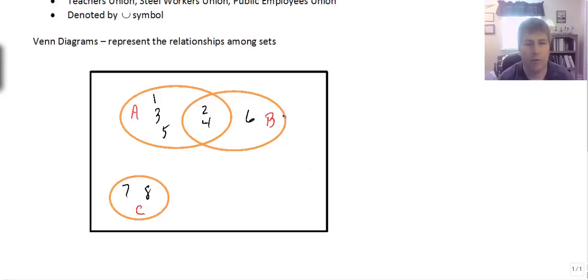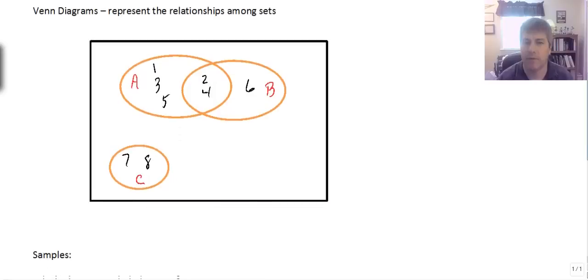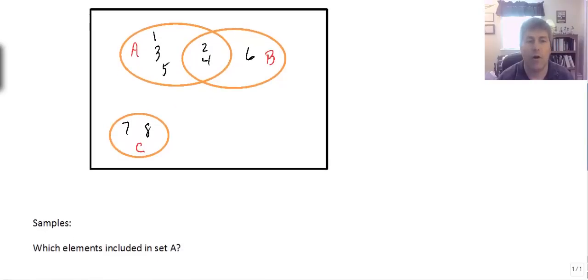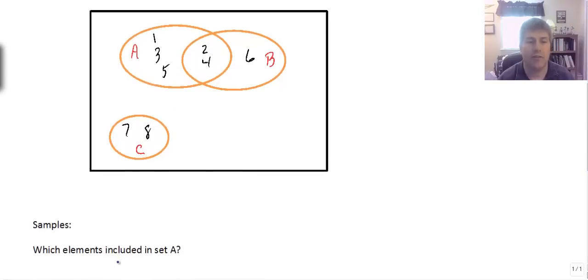Apparently there's an overlap here in sets A and B. So some questions we might ask ourselves: which elements are included in set A? Well in set A, if we look in set A, we have one, three, five...